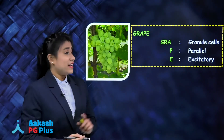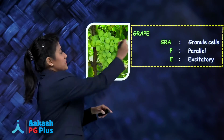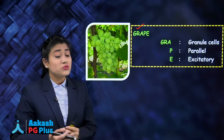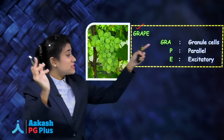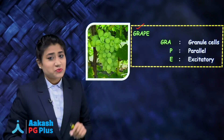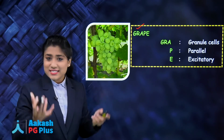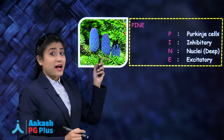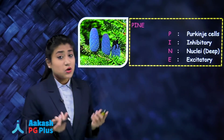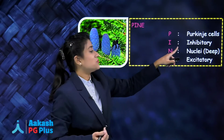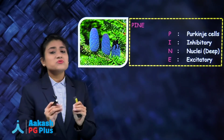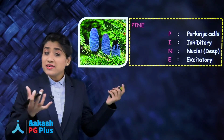Remember the mnemonic GRAPE: G = granule cells, R = (raw), A = axons, P = parallel fibers, E = excitatory. Granule cells send axons that form parallel fibers, and granule cells are the only excitatory cells in cerebellar cortex. Also remember PINE: P = Purkinje cells, I = inhibitory, N = deep nuclei, E = excitatory. Purkinje cells are inhibitory to the deep nuclei, while deep nuclei are excitatory.